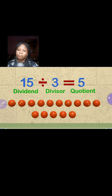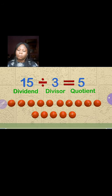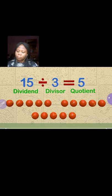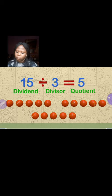So in this example, the 15 balls are the dividend and we need to split them between three kids. The three kids are the divisor, breaking the 15 balls into smaller groups. The balls are now split evenly into groups of five. The answer in a division problem is called the quotient. Great job, kids!